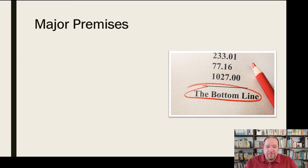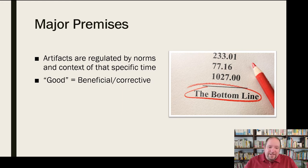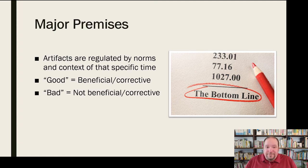The bottom line in terms of major premises is that artifacts are regulated by the norms and context of their specific time. They're created and judged within that certain time and context, and that matters — we can't separate an artifact from its historical context. In pragmatic analysis, 'good' is defined as anything beneficial or corrective for society. 'Bad' is the opposite — anything that is not beneficial or does not act in a corrective way toward some ill in that society.